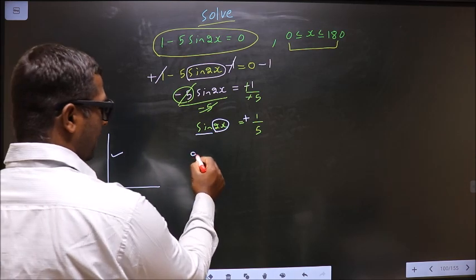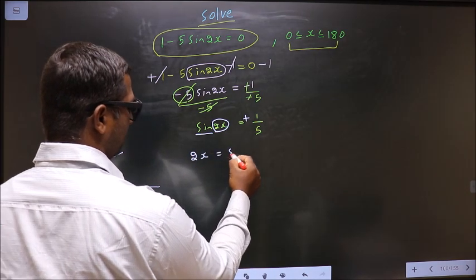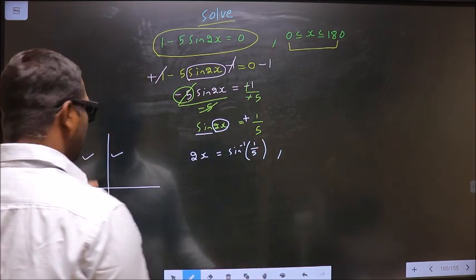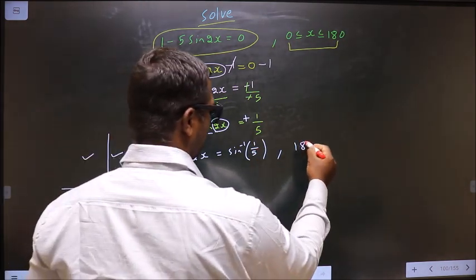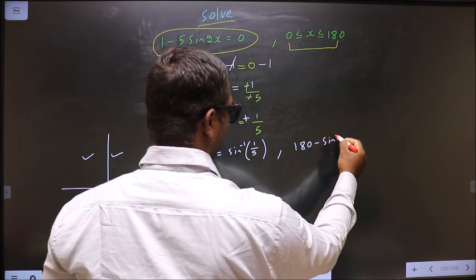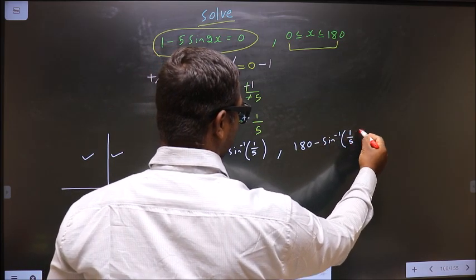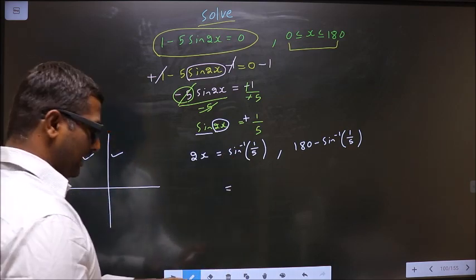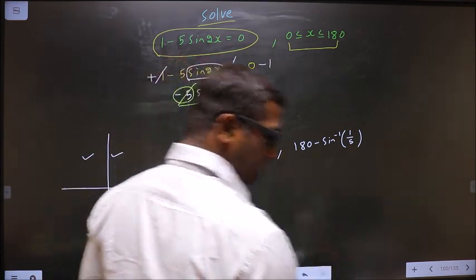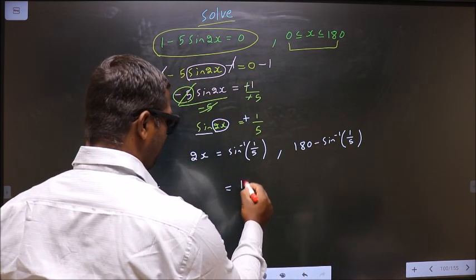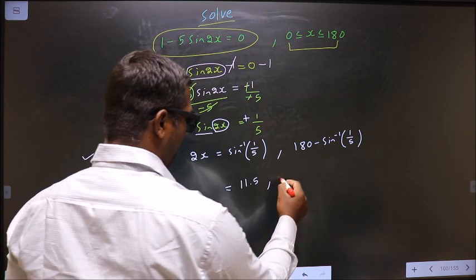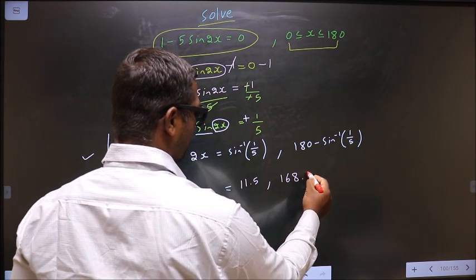To get an angle in the first, we do directly sin inverse 1 by 5. To get an angle in the second, we should do 180 minus sin inverse 1 by 5. Put this in the calculator, you should get 11.5. Calculate this, you should get 168.5.